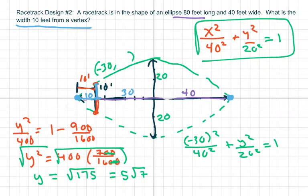So the width 10 feet from the vertex is 5 square root of 5.